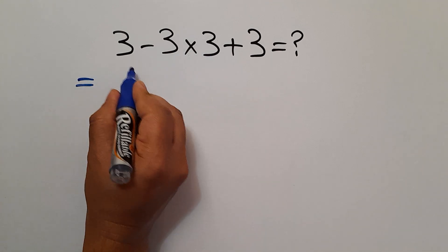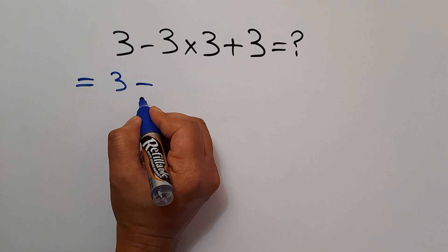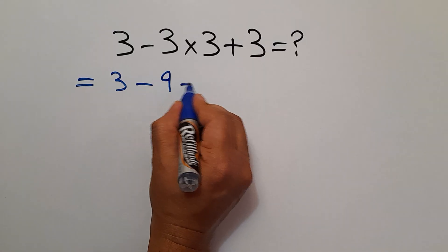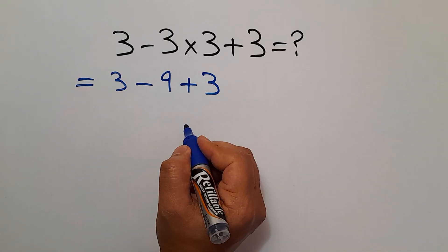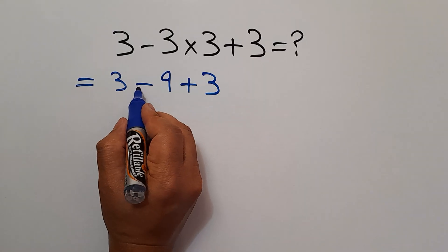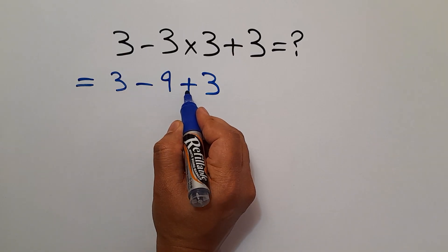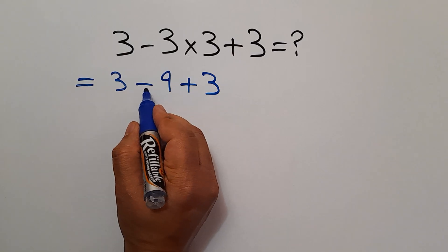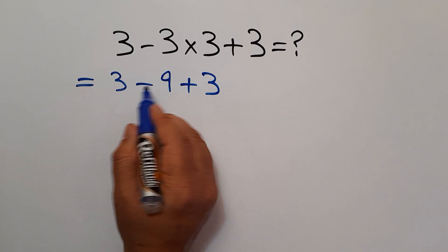So, 3 minus 9 plus 3. Remember that subtraction and addition have equal priority and we have to work from left to right.